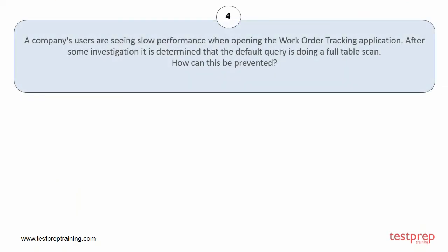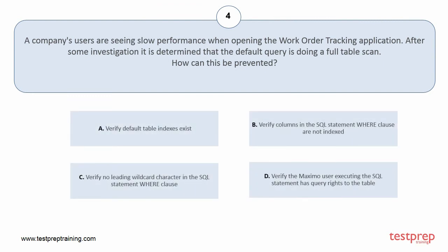Question number 4. A company's users are seeing slow performance when opening the work order tracking application. After some investigation, it is determined that the default query is doing a full table scan. How can this be prevented? Option A: Verify default table indexes exist. Option B: Verify columns in the SQL statement where clause are not indexed. Option C: Verify no leading wildcard character in the SQL statement where clause. Option D: Verify the Maximo user executing the SQL statement has query rights to the table. The correct answer is option A.